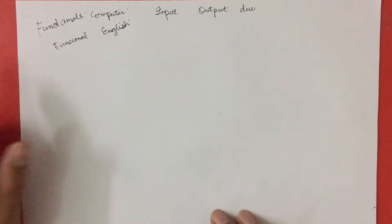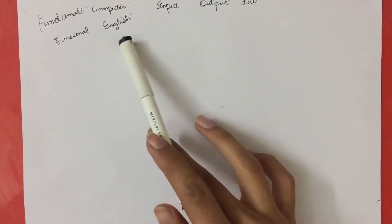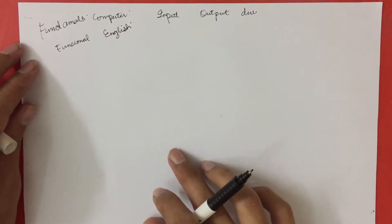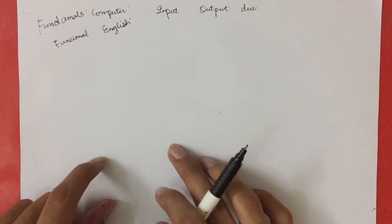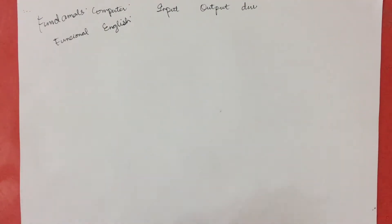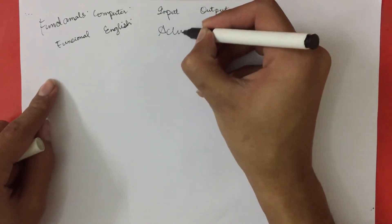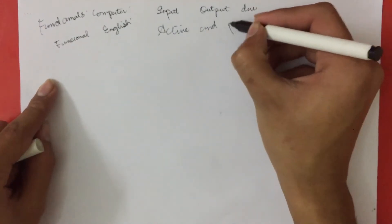Assalamu alaikum guys. Today we are going to learn about fundamentals of computers and functional English. In fundamentals of computers, we are going to learn about input and output devices and different types of input and output devices. In functional English, we are going to learn about active and passive voice.